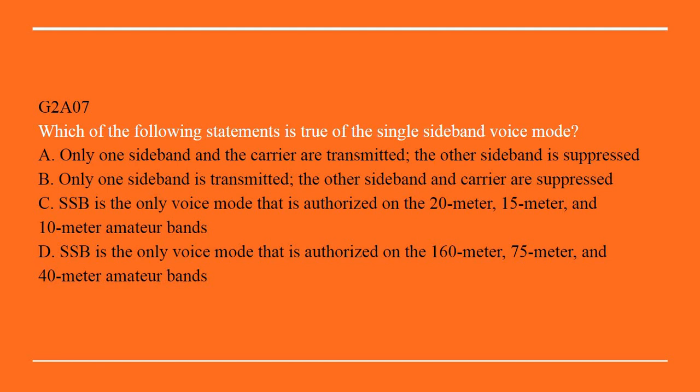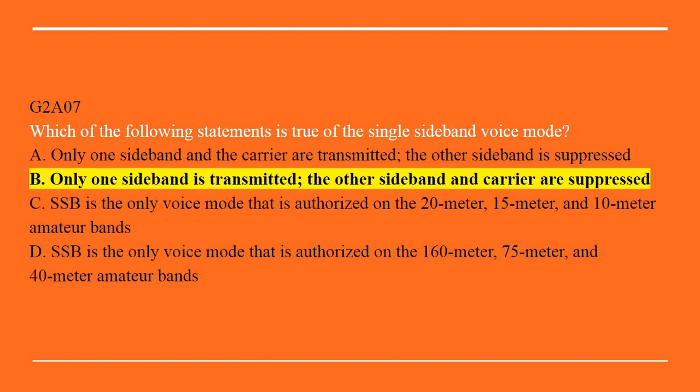G2A07: Which of the following statements is true of the single sideband voice mode? A. Only one sideband and the carrier are transmitted; the other sideband is suppressed. B. Only one sideband is transmitted and the other sideband and carrier are suppressed. C. Single sideband is the only voice mode authorized on the 20 meter, 15 meter, and 10 meter amateur bands. Or D. Single sideband is the only voice mode authorized on the 160 meter, 75 meter, and 40 meter amateur bands. Correct answer is B: Only one sideband is transmitted; the other sideband and carrier are suppressed.